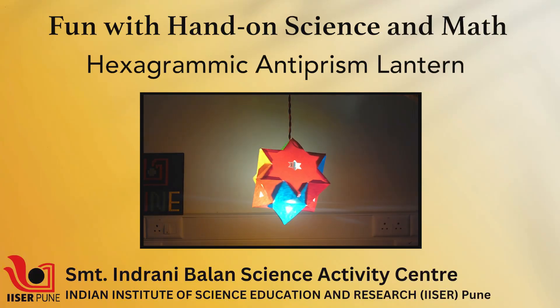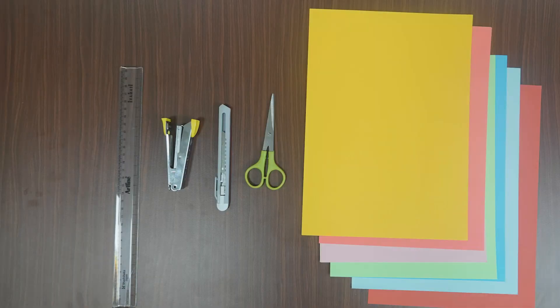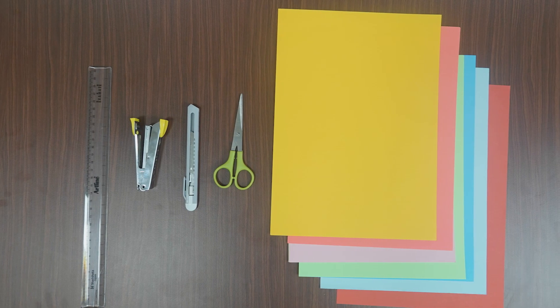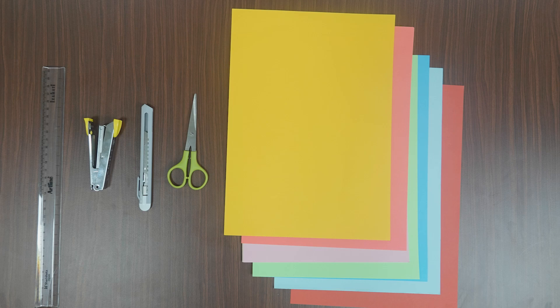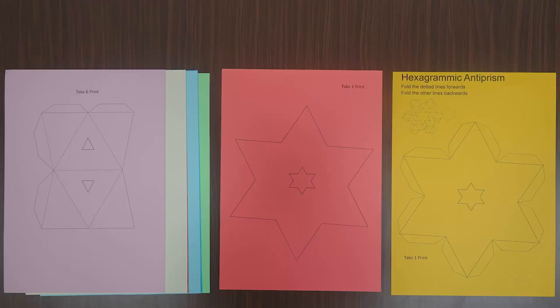Hello everyone, in this video we will learn how to make a hexagramic antiprism lantern. For this lantern you will need the following materials: scale, stapler, paper cutter, scissors, and some colorful papers. Check the description of the video to find the template required for making this lantern.